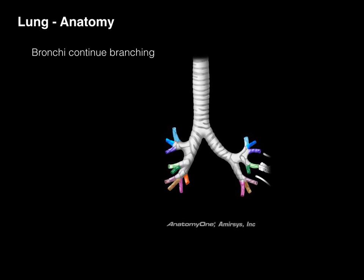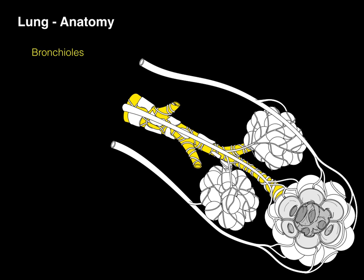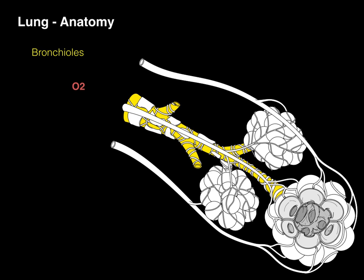The bronchi continue to branch as we go down. In the respiratory portion, we have bronchioles with plates of cartilage whose function is to keep the airways from collapsing upon themselves when we exhale. Smooth muscle controls the diameter of our airways — sympathetic innervation causes bronchodilation, and parasympathetic neurons cause bronchoconstriction by acting on the smooth muscle. Oxygen, when inhaled, moves all the way into the alveolar sacs, shown in green, which look like clusters of grapes.